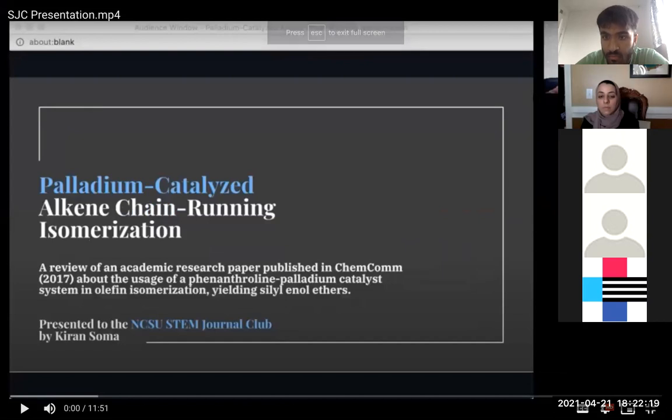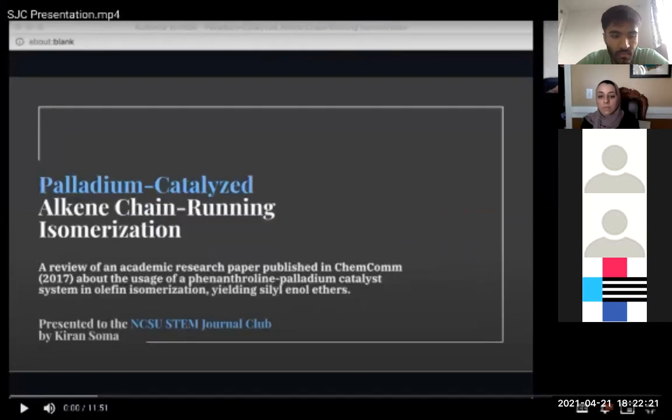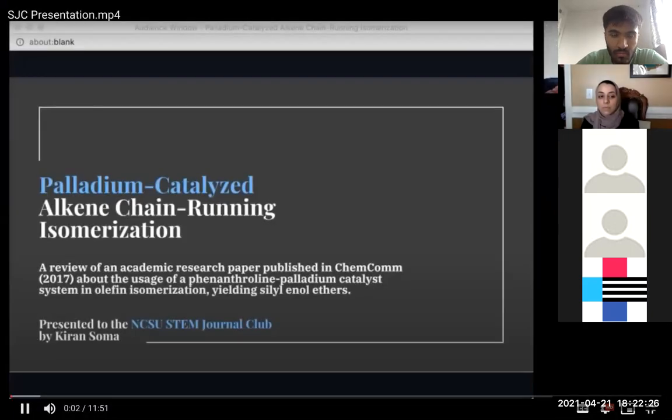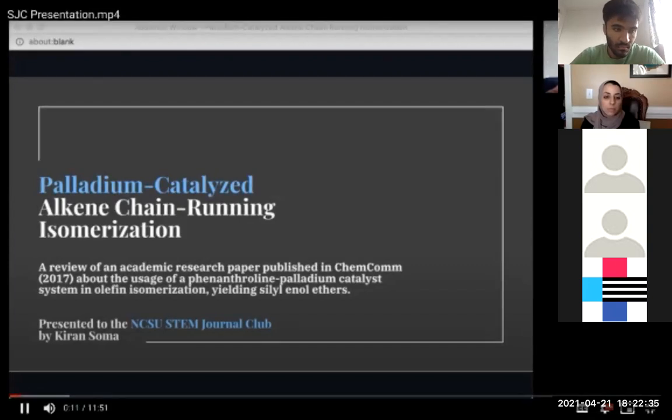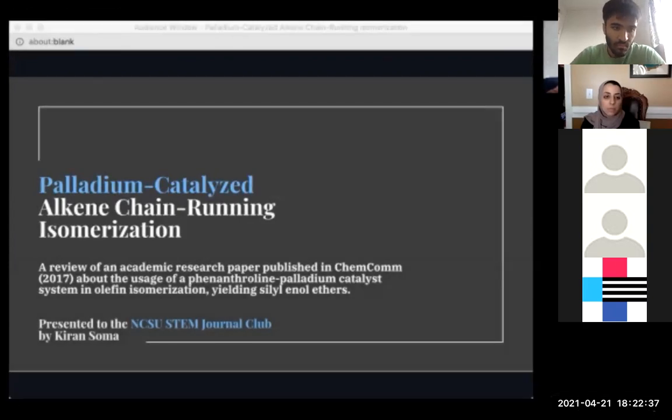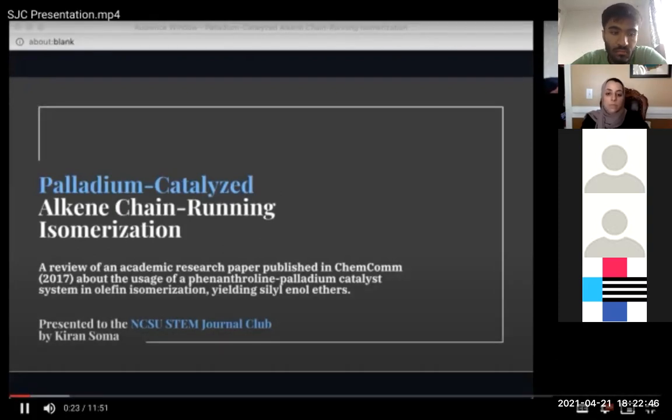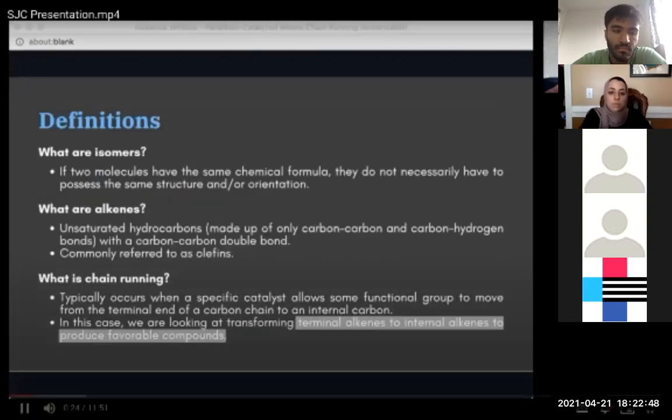Hi, my name is Corinne. I'm a first-year student double majoring in chemistry and communication. For this, I decided to look into a research paper on palladium-catalyzed alkene chain-running isomerization. I developed this review presentation based on that paper. Basically, to summarize, the researchers report a method of alkene isomerization that utilizes a phenanthroline-palladium complex to produce siloenol ethers. I know that sounds pretty complicated, so I'm going to start out with some definitions so that this is a little easier to understand.